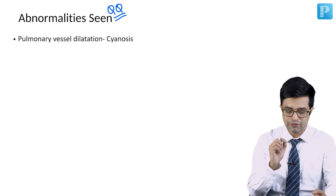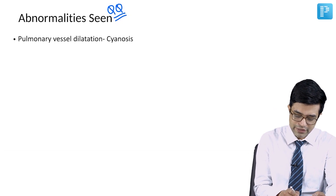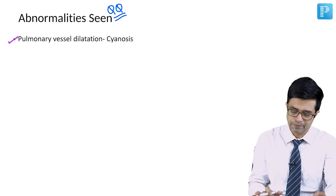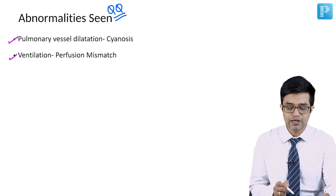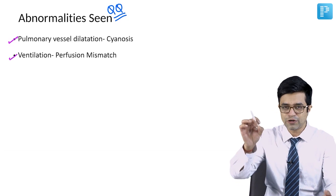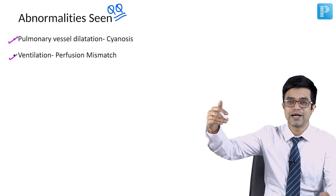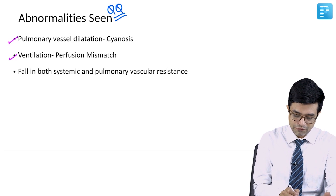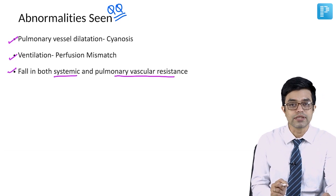Abnormalities seen: first of all, there is pulmonary vessel dilatation producing cyanosis — which is the most important thing. Then, because of this dilatation, there will be ventilation-perfusion mismatch. The question was something like: 'All of the following are seen in hepatopulmonary syndrome, except.' Third, there is a fall in both systemic as well as pulmonary vascular resistance.